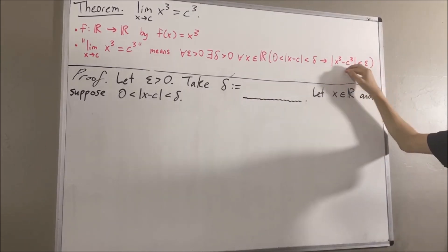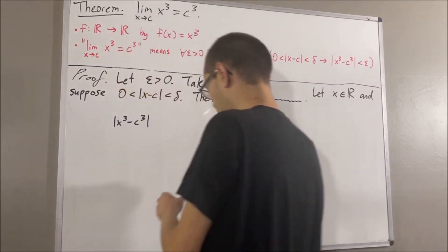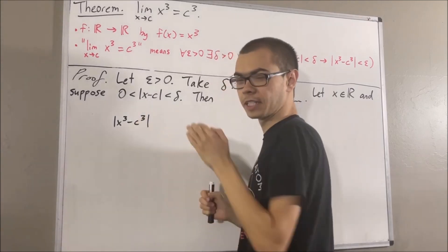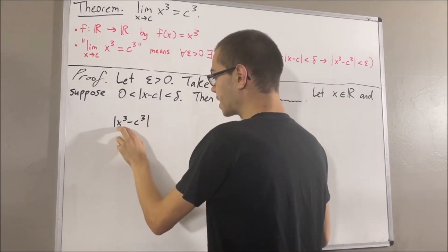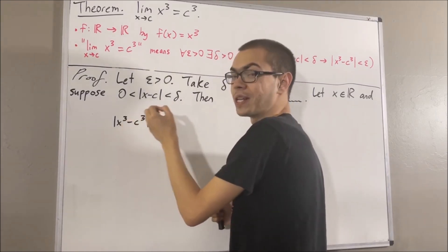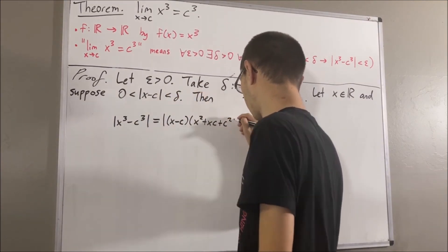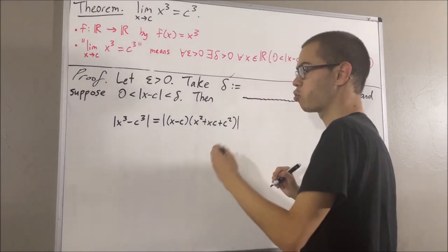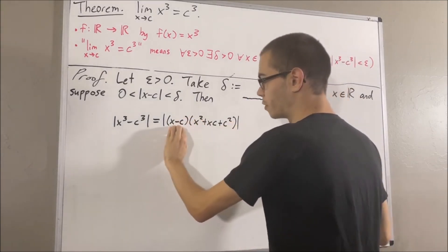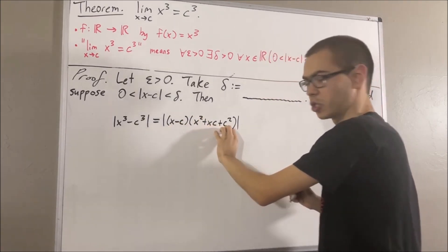Let's start by writing the left-hand side of this inequality. Since x cubed minus c cubed is a difference of perfect cubes, we have that x cubed minus c cubed is equal to x minus c times x squared plus xc plus c squared. And a property of absolute values tells us we can split this up into the absolute value of x minus c times the absolute value of x squared plus xc plus c squared.